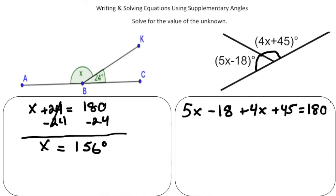Now, before we solve, we need to simplify this left-hand side. 5x and 4x add up to 9x. 45 and negative 18 add up to 27, and that together adds up to 180.